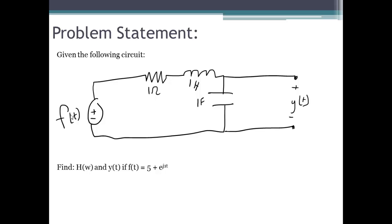We are given a circuit with the input f of t and the output y of t defined as the voltage drop across this capacitor. We are asked to find the frequency response of this circuit, h of omega, and the output y of t given this particular input.